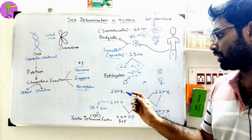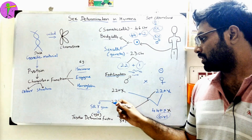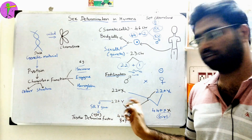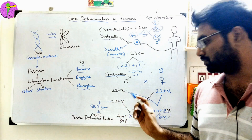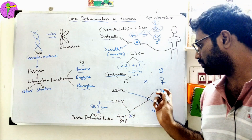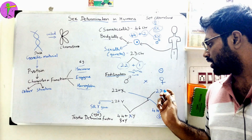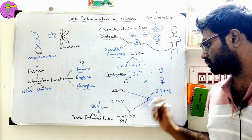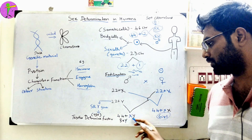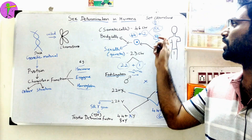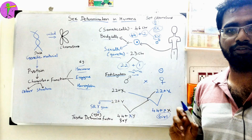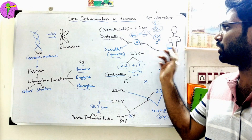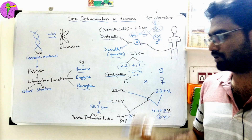In the second scenario, there is a Y-carrying sperm — 22 autosomes plus Y chromosome. Y is the sex chromosome. When this fertilizes the egg carrying X, you get an XY combination — that is a boy child. This is the biological symbol for a boy.